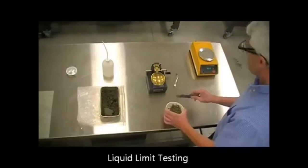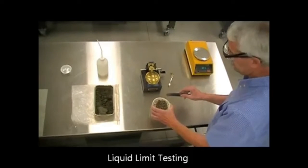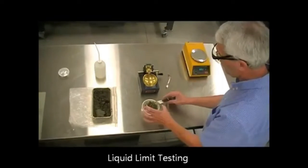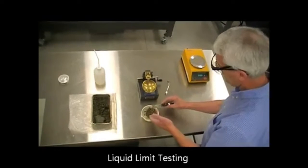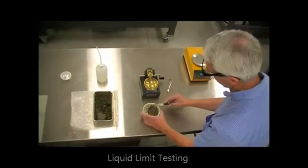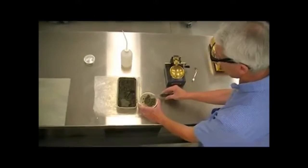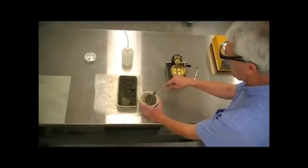Now we're going to proceed with the liquid limit, which is the state of water content that separates liquid from plastic behavior. So to make the soil behave as a liquid, we need to mix it up with a lot of water.